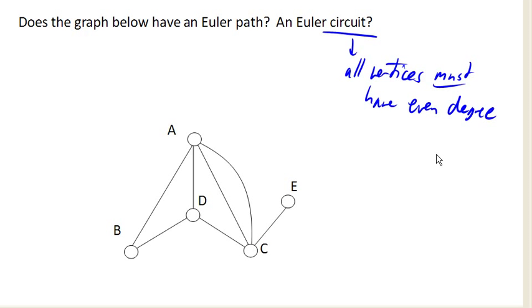The idea is really simple: we need to make it so that every time we come into a vertex, we have a way out. So if I have another way in, I need another way out. And so we need even degrees on all of our vertices.